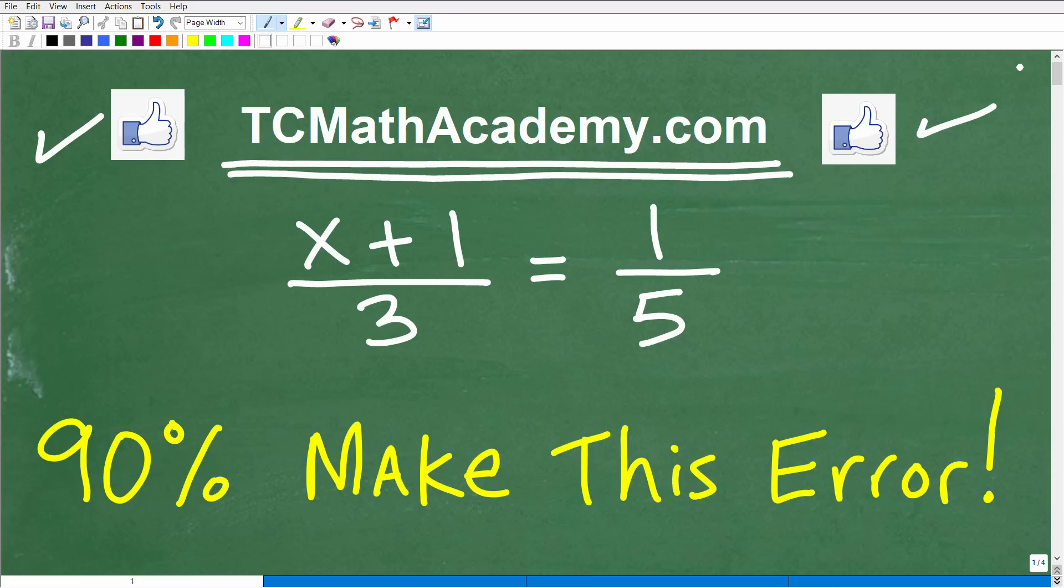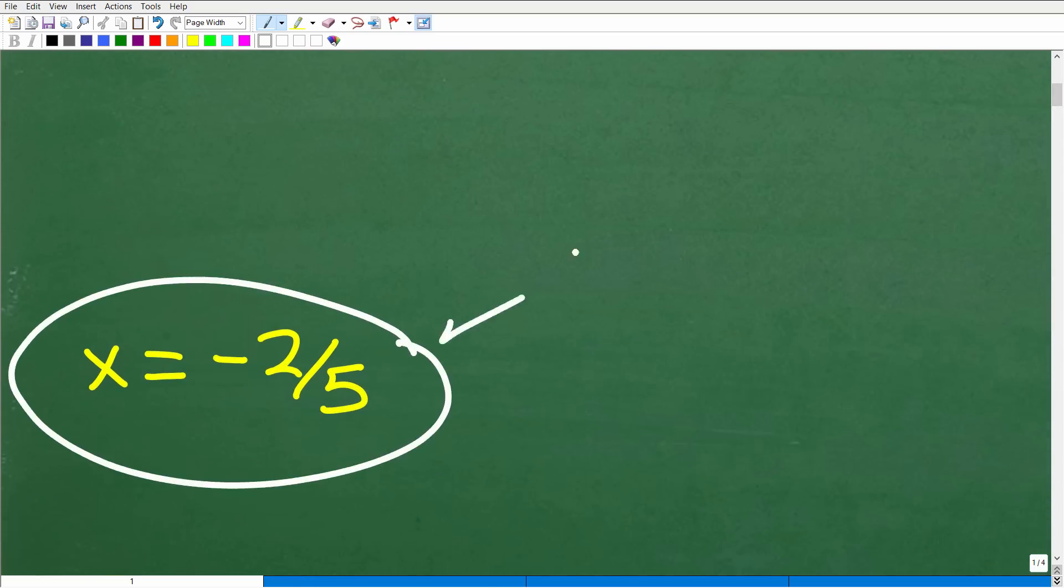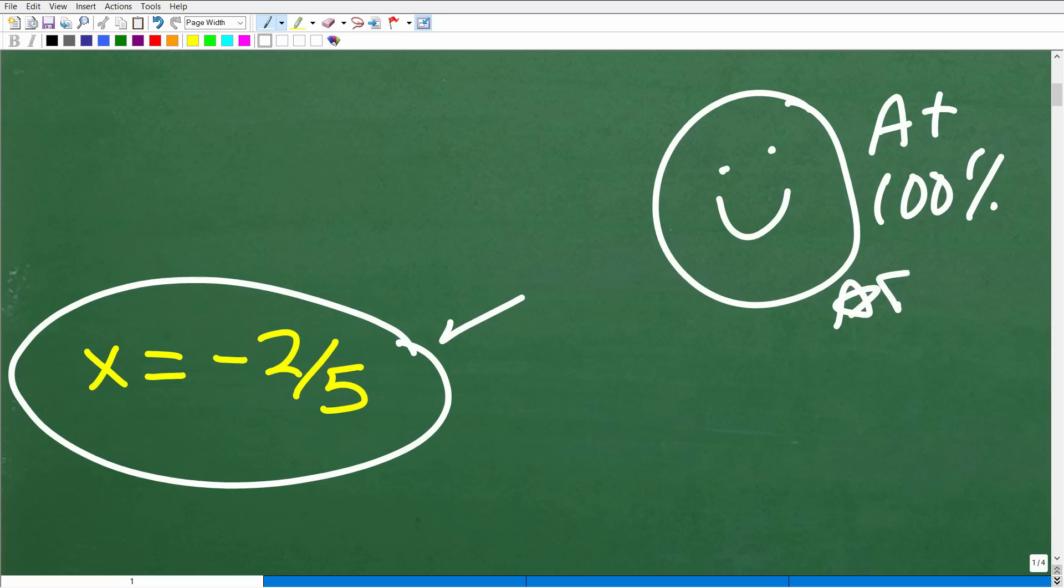Let's take a look at the answer to this equation. What is x? Well, x is equal to negative 2 fifths. Now, if you got this correct, you clearly did not make this error that I talked about. You likely avoided this mistake. You couldn't get this answer without making this error. So let's give you a nice little happy face, an A+, a 100%, and a few stars. You can tell your friends and family that you know a thing or two about solving algebra equations.